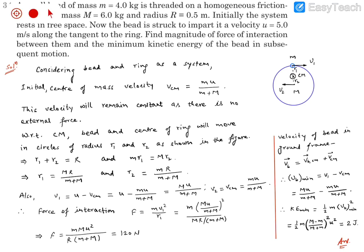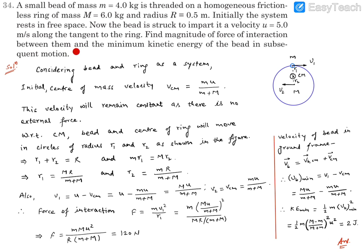Question number 34: A small bead of mass m = 4 kg is threaded on a homogeneous frictionless ring of mass M = 6 kg and radius R = 0.5 meter. Initially the system is at rest in free space. The bead is struck to impart a tangential velocity u = 5 m/s. Find the magnitude of the interaction force between them and also find the minimum kinetic energy of the bead in subsequent motion.